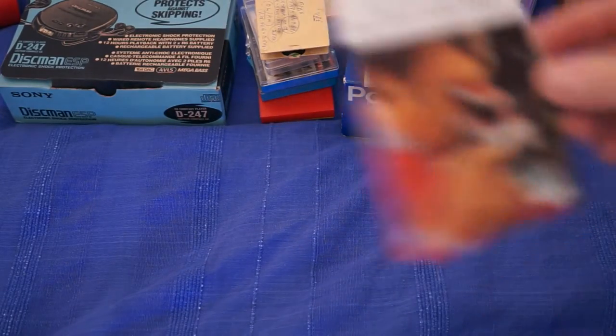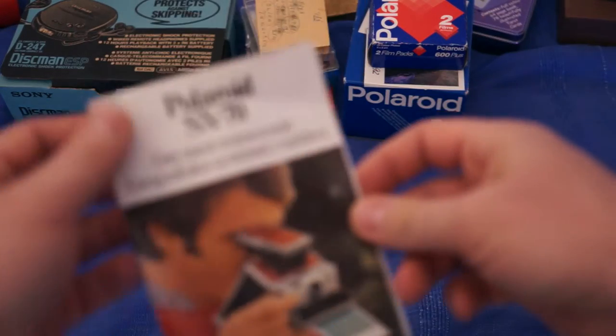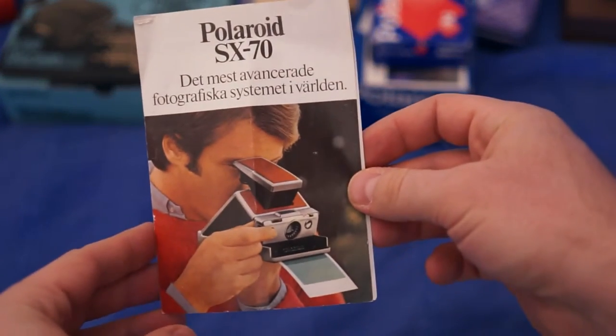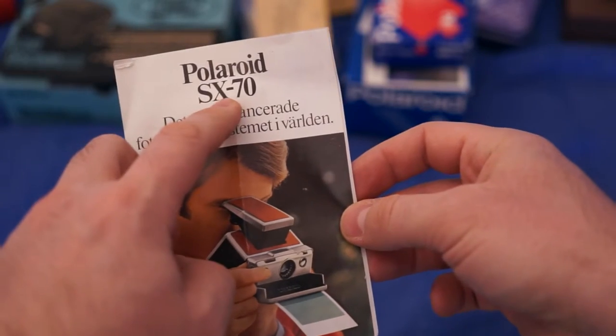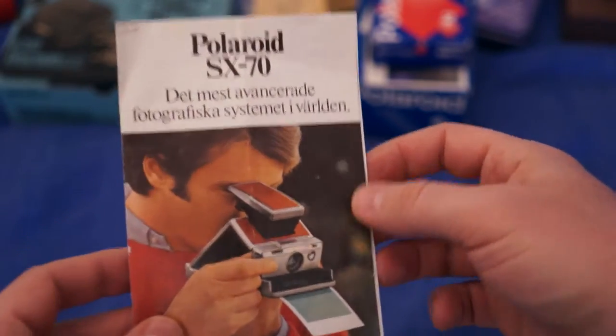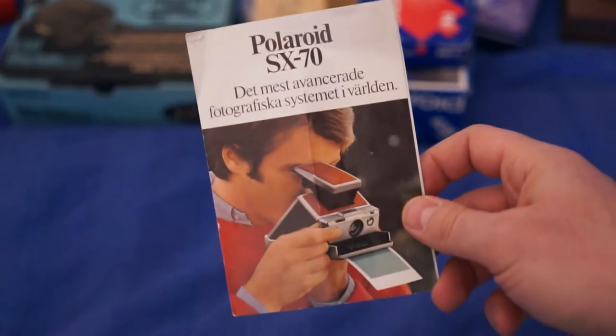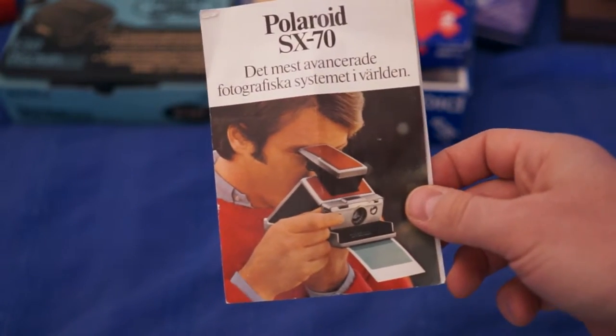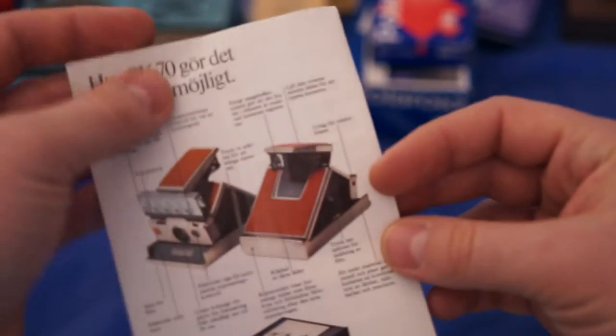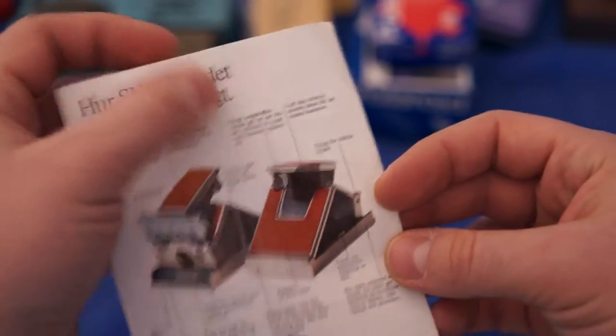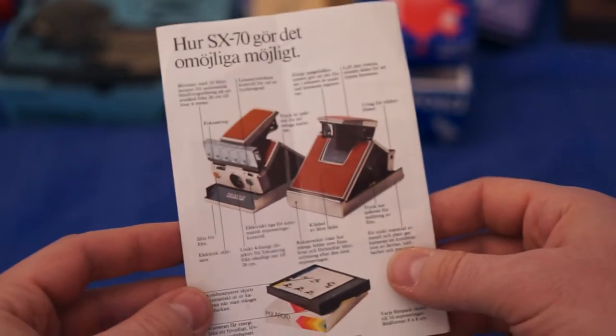It also had a little brochure. This is SX-70 and that film doesn't go for that one, so I don't know why it was in that box. Just a small pamphlet in Swedish over how it works. Pretty cool 70s style.